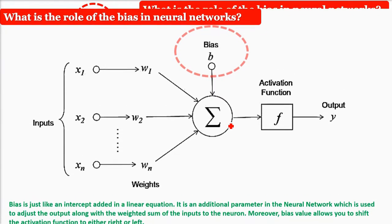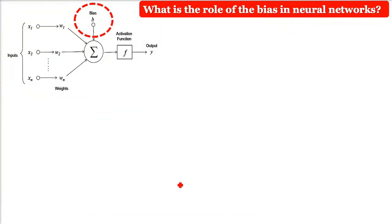Let us take an example to understand it clearly. We know that this y will be x1 into w1 plus x2 into w2 till xn into wn. The output will be the sum of weights into inputs: x1w1 plus x2w2 plus xnwn plus a bias.